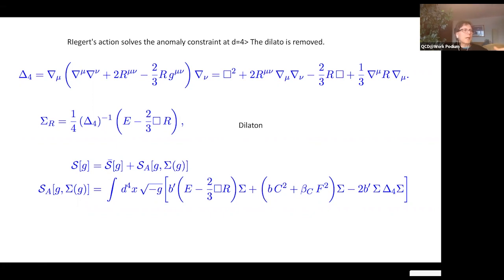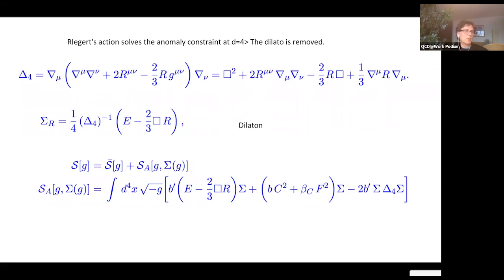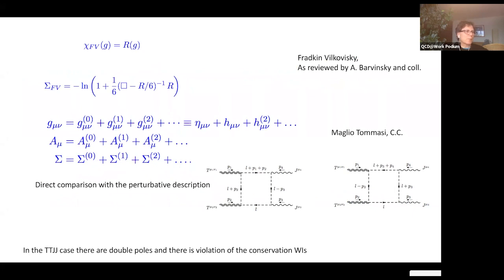This is a paper that will appear this week, with Matteo Maglio and Ricardo Tomasi. What we have done is essentially show that the correlation functions generated from this type of action do not satisfy the constraints obtained from the perturbative analysis. We performed the perturbative analysis for one correlator which is not the ⟨TTTT⟩ — that is more complicated and is probably next on the list — but the ⟨TTJJ⟩ correlator, which contains two gravitons and two conserved currents.